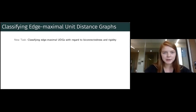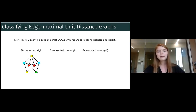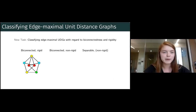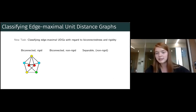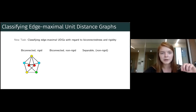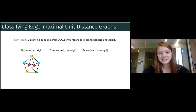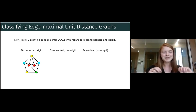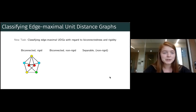To reduce our search space to something manageable, we can limit our search to finite edge maximal unit distance graphs, since we can build any graph from finite edge maximal components. We can divide the set further by looking at bi-connectedness and rigidity. A graph is bi-connected if we'd have to remove two vertices to disconnect it into two separate pieces. Rigidity means we can't move any individual vertex without breaking unit distance edges elsewhere in the graph. Finding the bi-connected graphs like the Moser spindle is the most computationally simple task here.